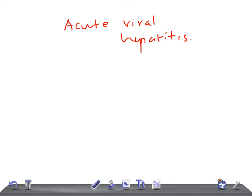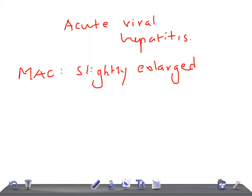There are so many viruses that cause viral hepatitis — A, B, C, D, and E. The most common consequence of all hepatotrophic viruses is acute inflammation that involves the entire liver. On macroscopic appearance, the liver is going to be slightly enlarged.